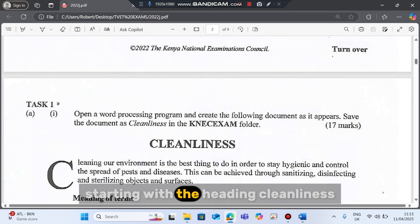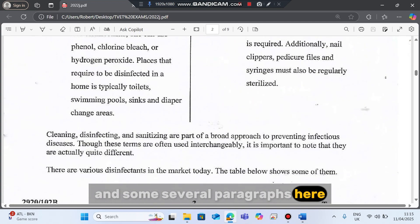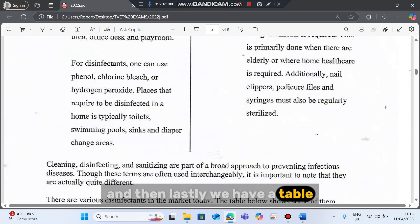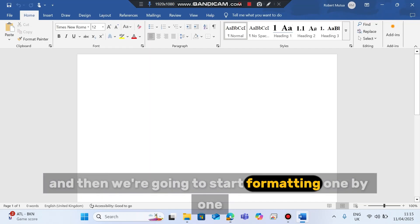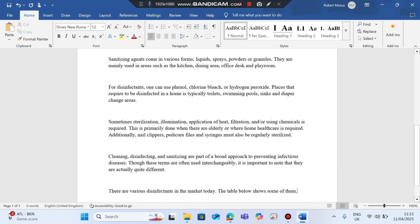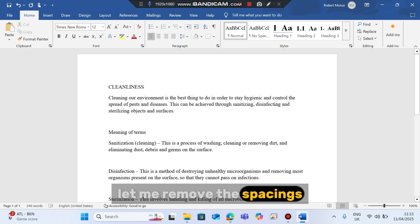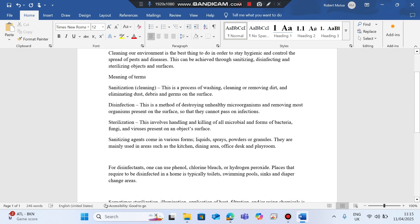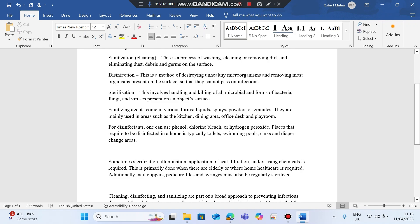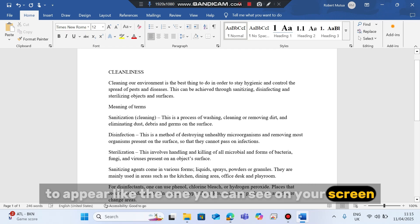From there, we have some text here starting with the heading cleanliness, then several paragraphs here, and lastly we have a table. So I'm going to paste a plain text in my document and then we're going to start formatting one by one. Here is the blank document. Let me remove the spacings just like this. I'm going to show you how you can make this text appear like the one you can see on your screen.